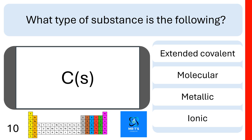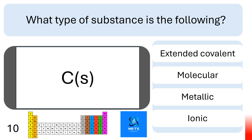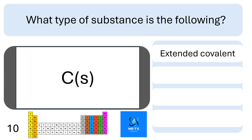Question ten: what type of substance is a carbon solid — either diamond or graphite? Is it extended covalent, molecular, metallic, or ionic? If you put down extended covalent, you are right.